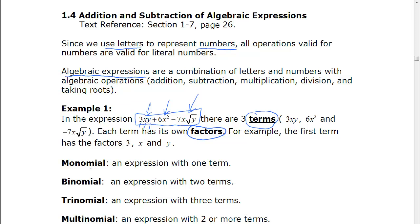A couple more terms that you need to know. Monomial, mono means one, so that's an expression with one term. Binomial, bi means two, so that's an expression with two terms.